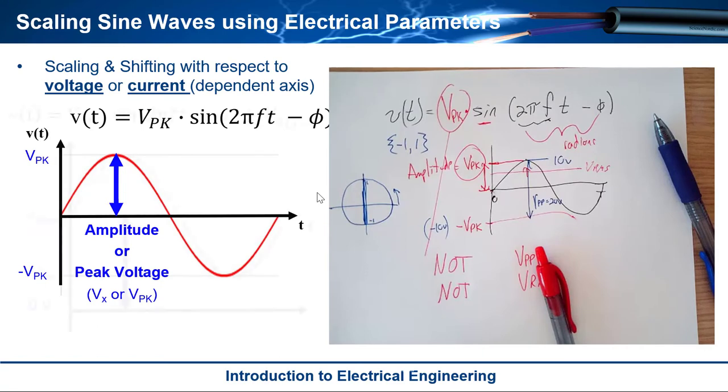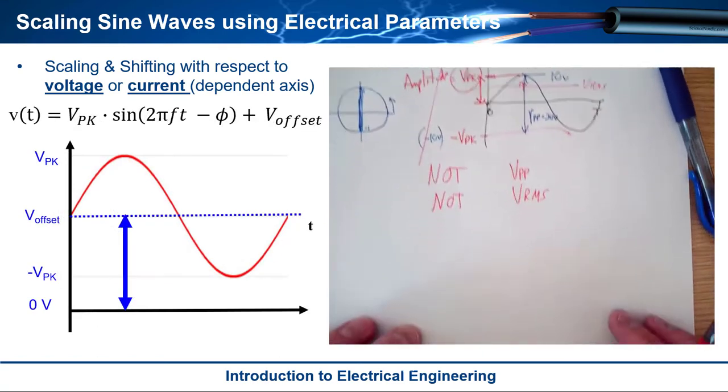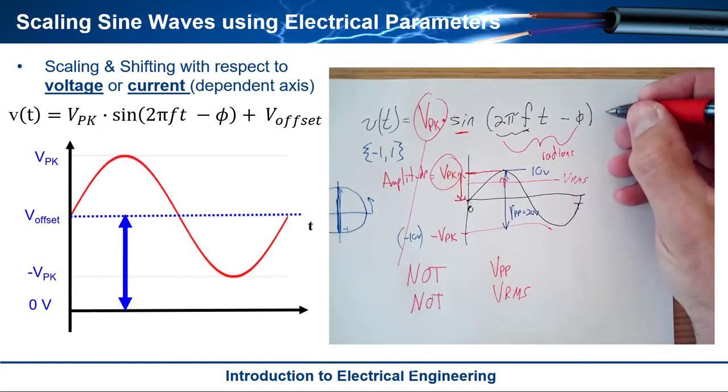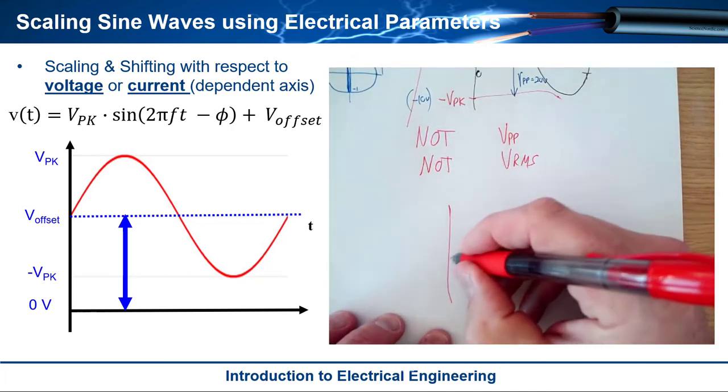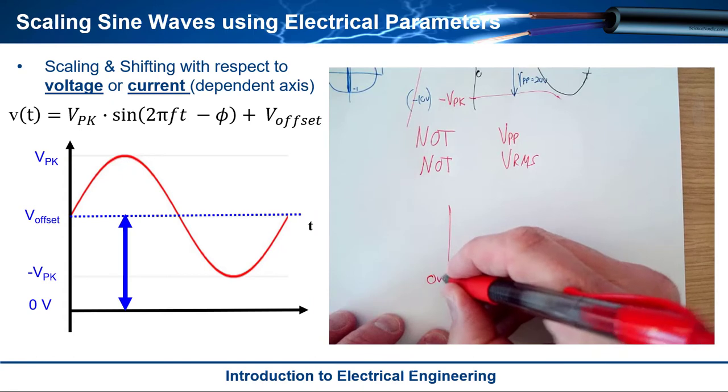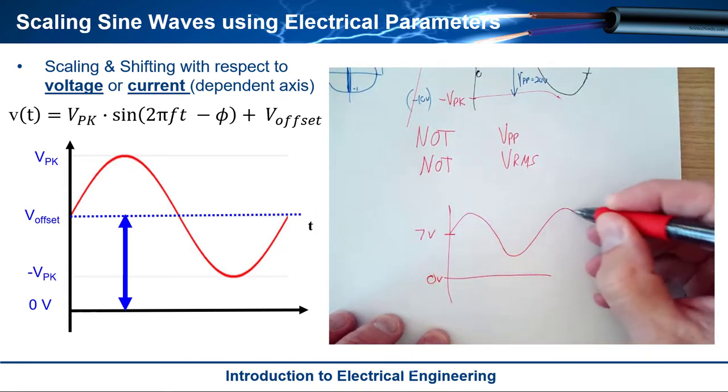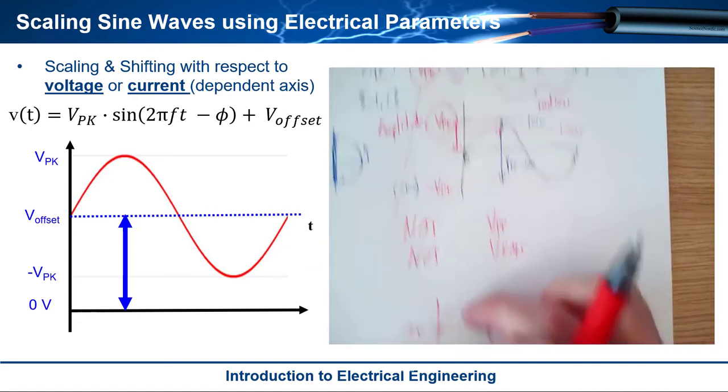Okay all right so then the next parameter is simply what if I wanted to shift this thing up. And this one's even easier than that is all you do is just add to it. So you just come over here and just say add v_offset. Okay and that represents like if I had a sine wave so like let's say this is zero volts and my sine wave was centered at like seven volts and I had something like this.